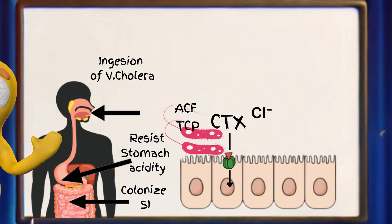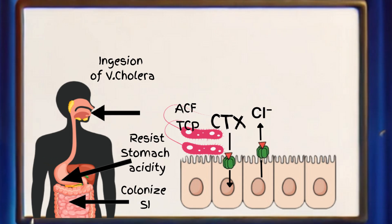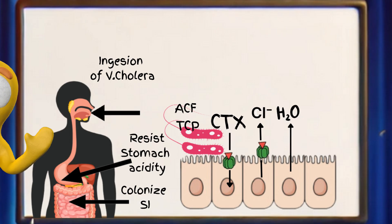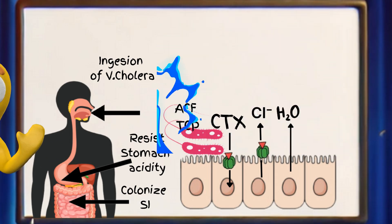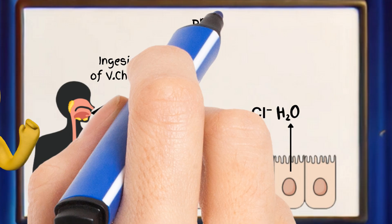These chloride ions are pumped out of the cells and into the lumen of the intestine, creating an imbalance because the concentration of chloride ions outside the cells becomes much higher than inside. Water naturally follows chloride ions due to osmosis, trying to balance the concentration on both sides of the cell walls. So when the cells pump out chloride ions, water flows into the intestine to follow these ions. This influx of water leads to a flood in the intestine, causing the hallmark symptom of cholera: profuse, watery diarrhea.